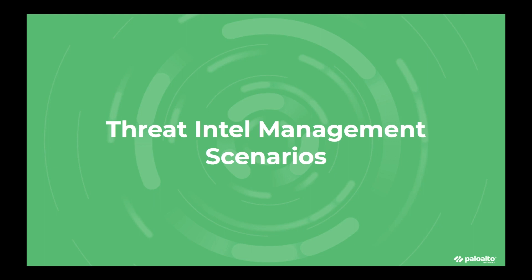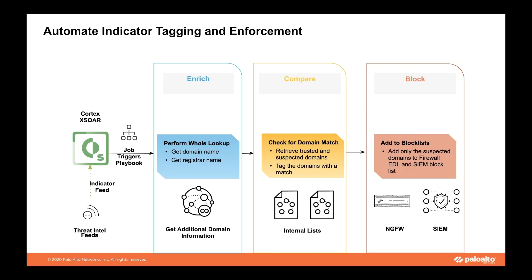One common threat intel management use case involves cyber threat intelligence teams responsible for blocking known bad indicators of compromise, such as bad domains, at the network perimeter using firewalls, web proxies, and email gateways. It is critical that the security team does not disrupt business by inadvertently blocking traffic to or from a known trusted business partner. For example, domains belonging to business partners or domains with known good registrar information should not necessarily be blocked.